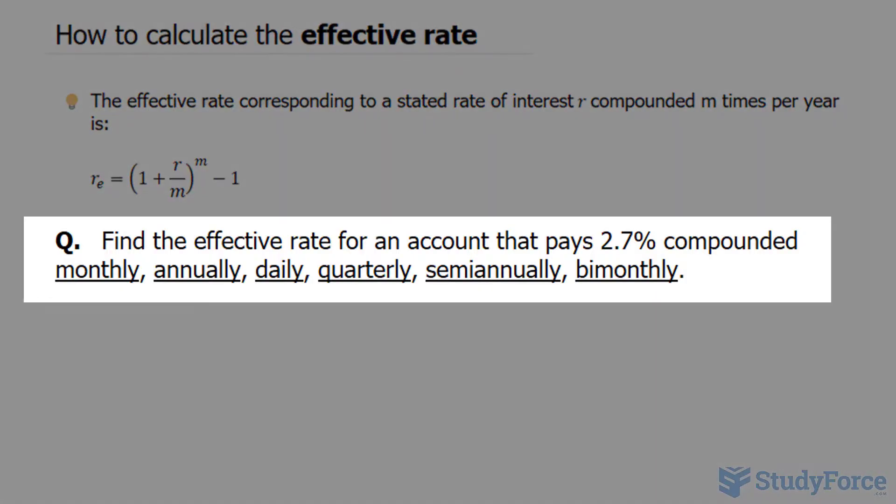Our question reads, find the effective rate for an account that pays 2.7% compounded, and we have to find out monthly, annually, daily, quarterly, semi-annually, and bimonthly.